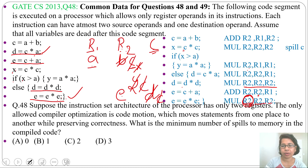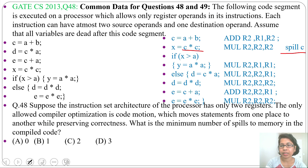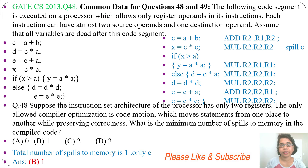So in total, we only did one spill: we stored register r2's content into the memory location for c, and c was never changed after that. By just one spill we can write all the machine instructions. So the answer is option B: 1. In the next lecture I will solve question number 49. If this lecture was helpful, please like and subscribe. Thank you.